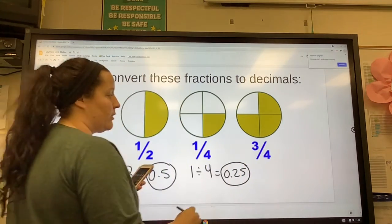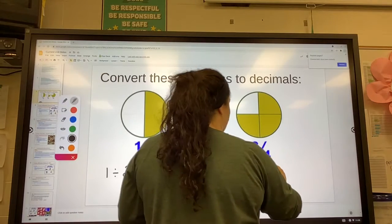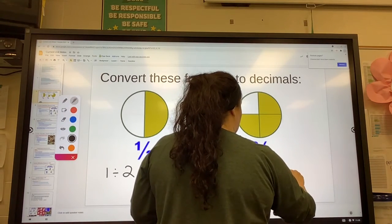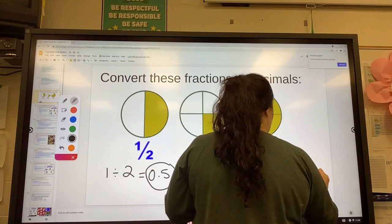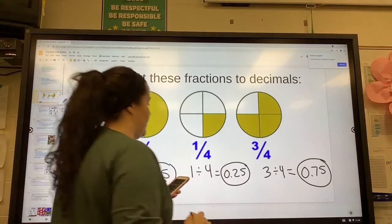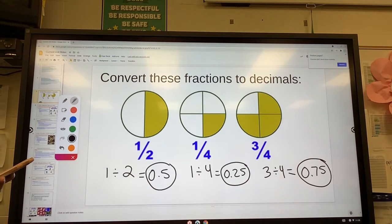Last thing, 3 fourths, top divided by the bottom, is 0.75 on my phone. So to convert a fraction to a decimal using your calculator, you take the numerator and you divide by the denominator.